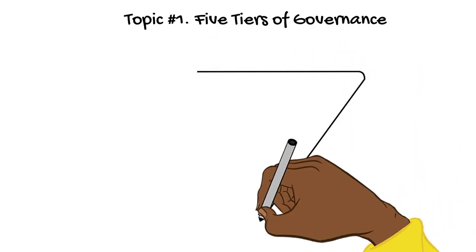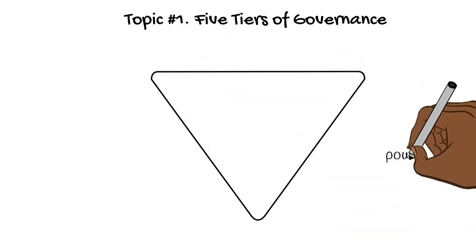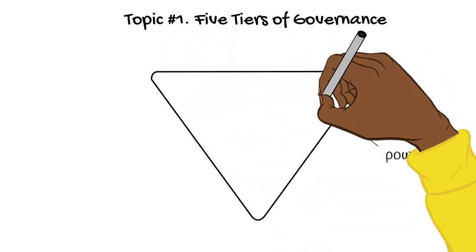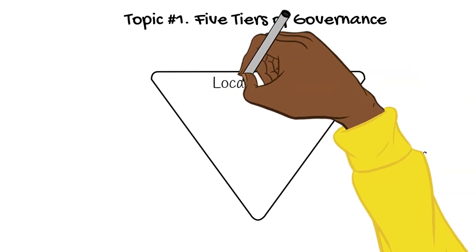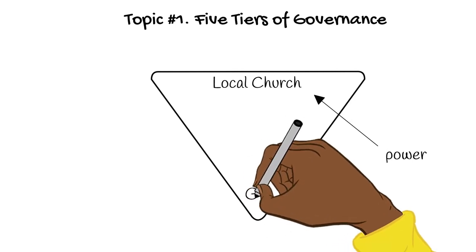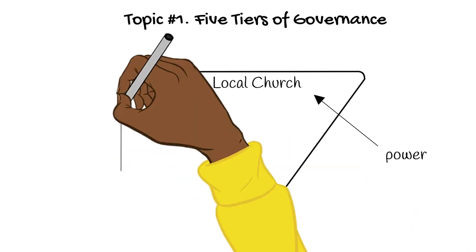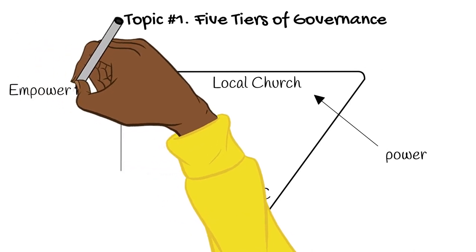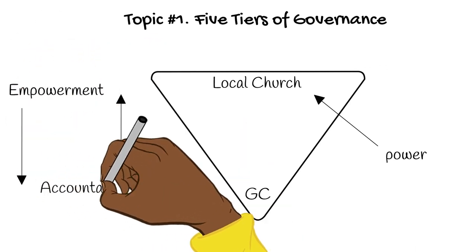The church operates much like an upside-down pyramid, with the power actually being held at the bottom instead of the top. While decisions made at the top do guide the levels below, most of the authority is technically held at the local church level. Each level both empowers and is held accountable to those below.